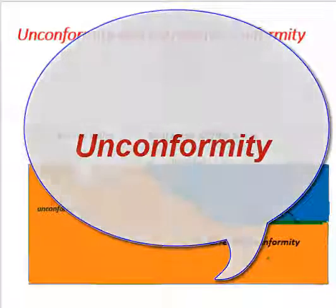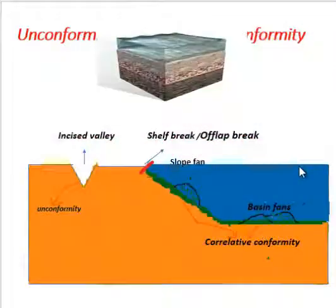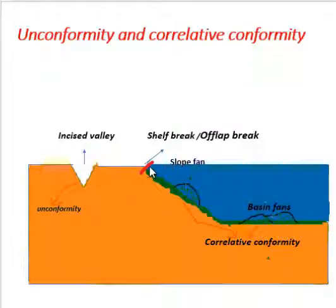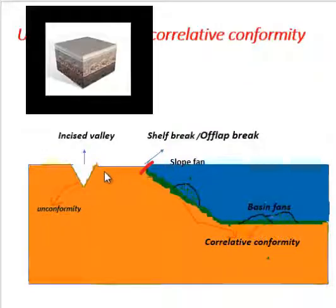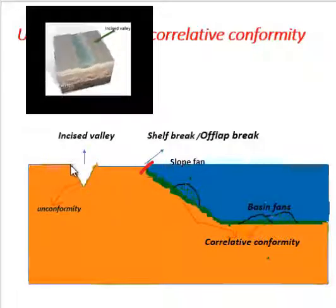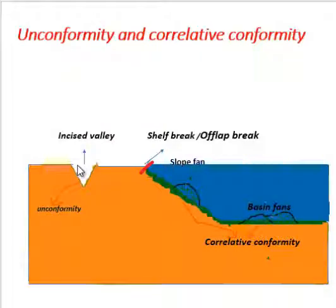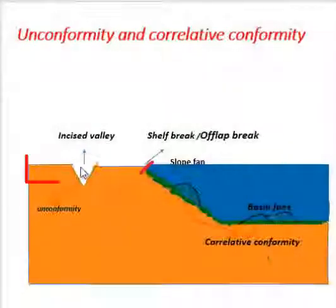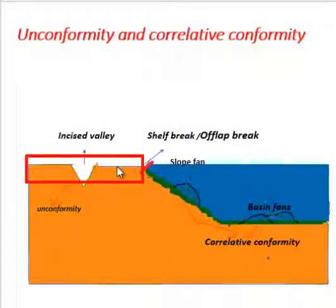When sea level falls below the shelf break or offlap break, an incised valley forms — a V-shaped valley produced by river erosion — creating an unconformity. In this shelf area, an unconformity is produced.